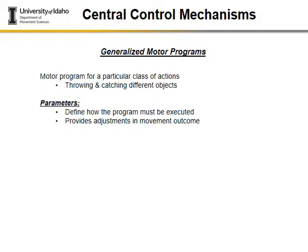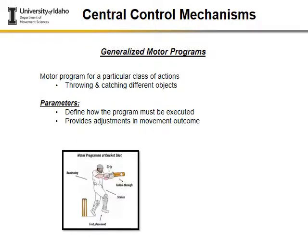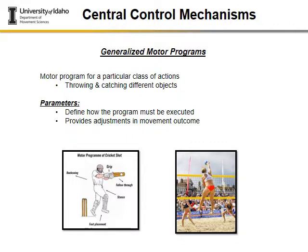When we talk about GMPs, we talk about parameters — these define how the program must be executed. The key component is they provide adjustments in the movement outcome. For example, swinging a cricket bat versus a baseball bat versus a softball bat, or a golf swing — these are all similar but have different components that are slightly different. In volleyball, whether you have a blocker taking away the line or a cross shot, or whether the ball is set tight or far, these are all parameters that must be adjusted to achieve the outcome.